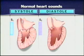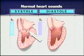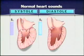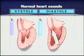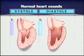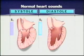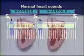The first sound, S1, accompanies mitral valve closure. The second sound, S2, accompanies aortic valve closure. Pulmonic and tricuspid valve closure may contribute to these sounds.